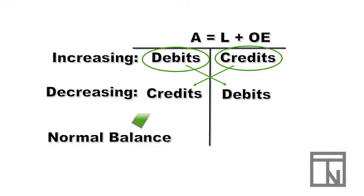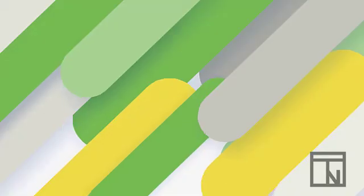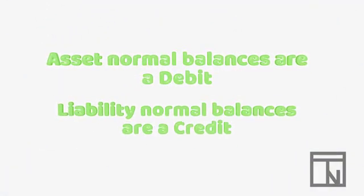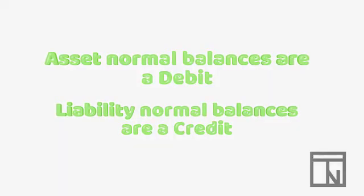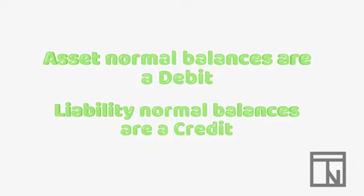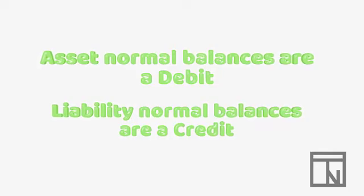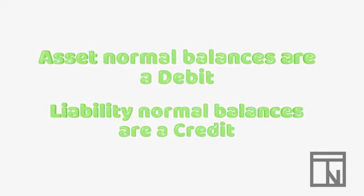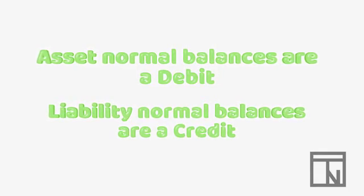Since most accounts typically have positive balances, the increasing side of a transaction is called its normal balance side. For example, the normal balance side of an asset account, like cash, is the debit side, since that's the side that makes it go up. And the normal balance side of a liability account, like a loan, is the credit side, since that's the side that makes liabilities go up.